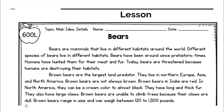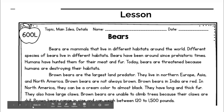Brown bears are the largest predator. They live in northern Europe, Asia, and North America. Brown bears are not always brown — brown bears in India are red, and in North America they can be a cream color to almost black. They have long and thick fur and large claws. Brown bears are unable to climb trees because their claws are dull. Brown bears range in size and can weigh between 120 to 1,500 pounds.